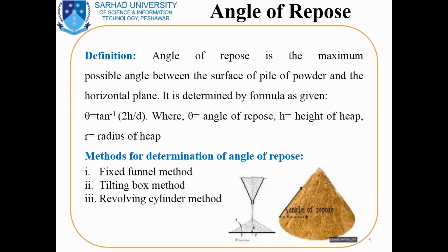There are three methods for determining the angle of repose. The first one is the fixed funnel method, the second method is the jolting box method, and the third method is the revolving cylinder method.